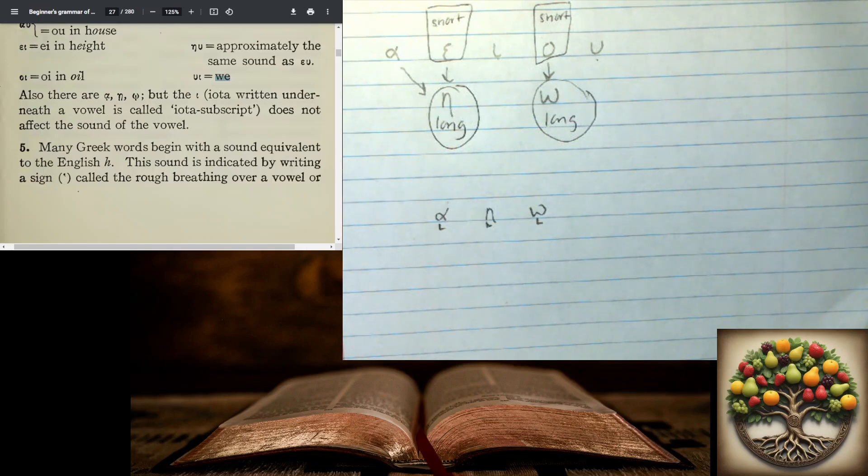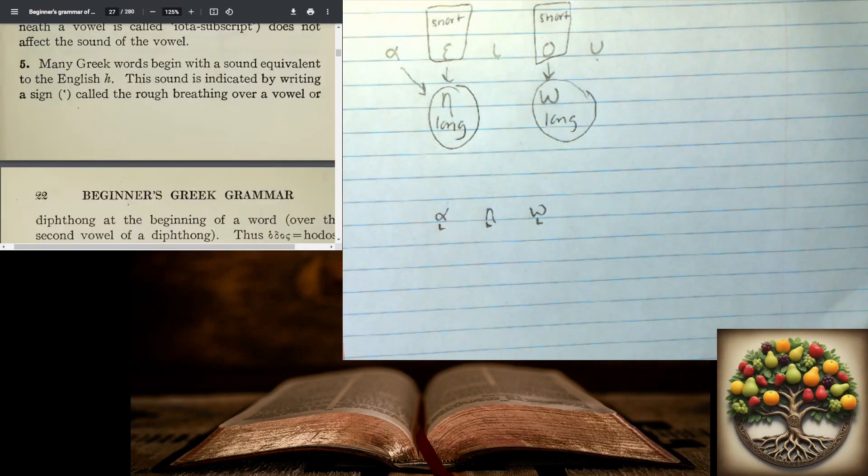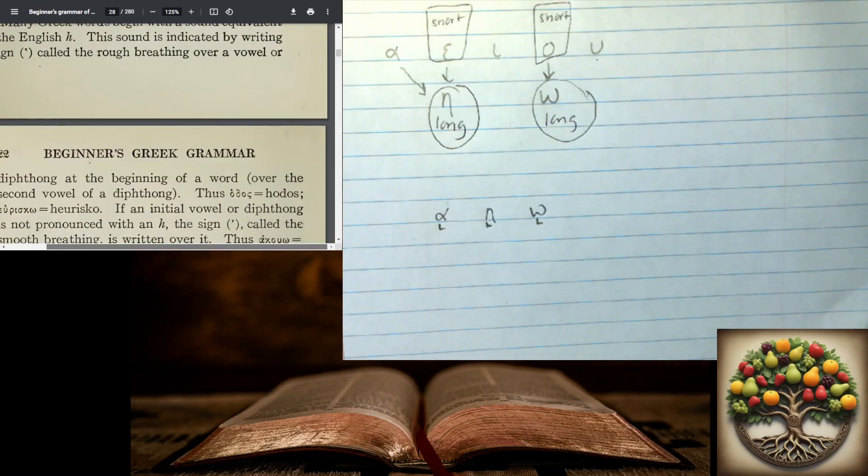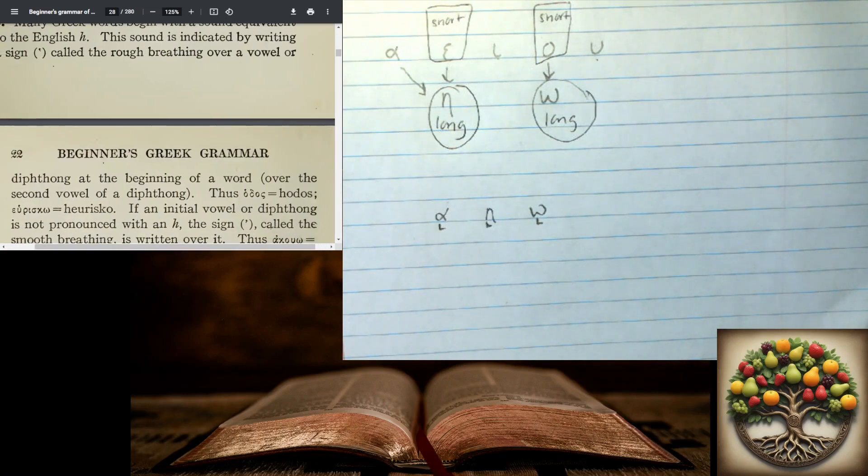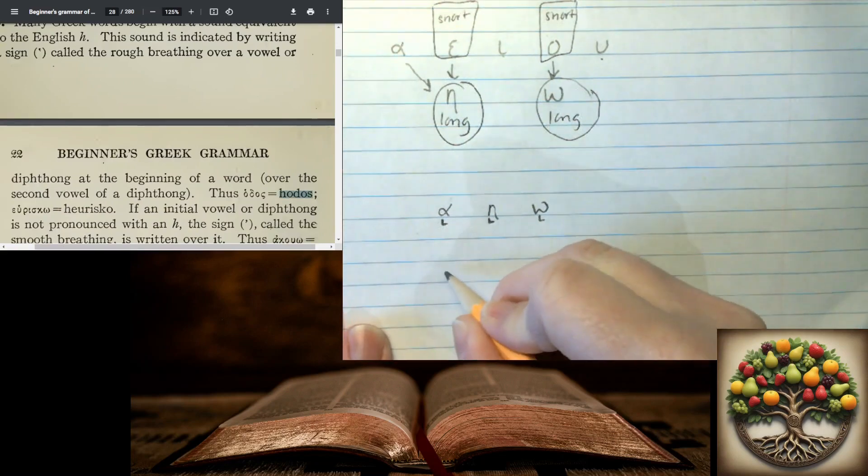Number five is going to introduce the breathing mark. And the breathing mark is really going to be the sound H, or it's going to exclude the sound H in front of a vowel. So the rough breathing is going to include the H sound. And I'm going to write this hodos. So here's our omicron.